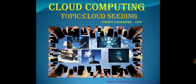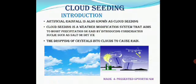Now let us go to the topic of cloud seeding. Cloud seeding means to make rainfall artificially. Cloud seeding is a weather modification system to bring rain artificially and improves a cloud's ability to produce rainfall or snow by artificially adding condensation nuclei to the atmosphere, such as salt or dry ice. The dropping of crystals into clouds to cause rain.